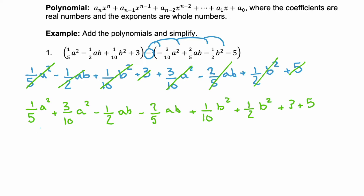Now that we have written all of those like terms near each other, we can combine them. First we're going to combine these a squareds, but notice that the coefficients are fractions and they don't have common denominators. So we need common denominators — here that would be 10. 1/5 is equivalent to 2/10, so we can add 2/10 and 3/10, which gives us 5/10 a squared.